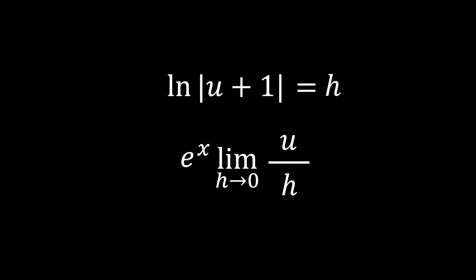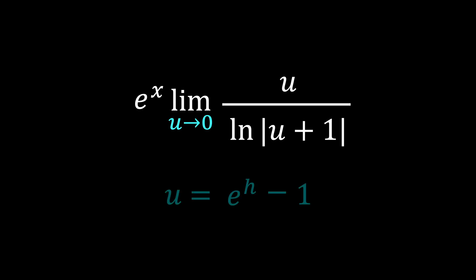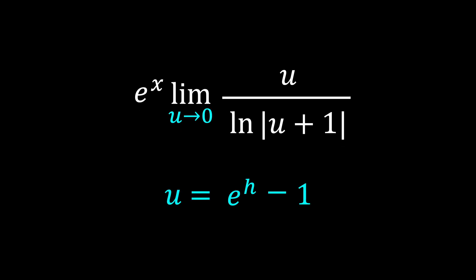Substituting this expression in for h results in the following expression. However, for clarity, it is important to note that we are able to change the variable of approach in the limit from h to u as the limit of our substitution as h tends to zero is also zero.